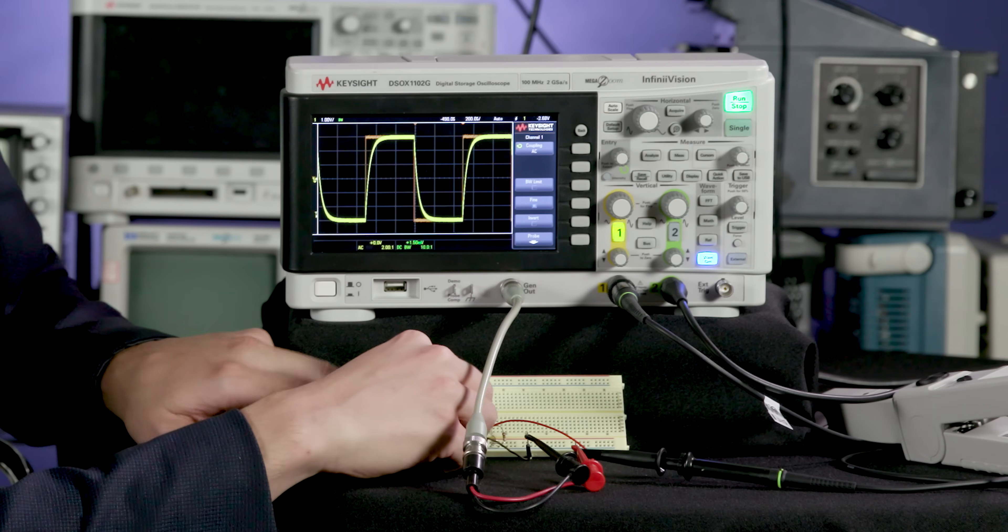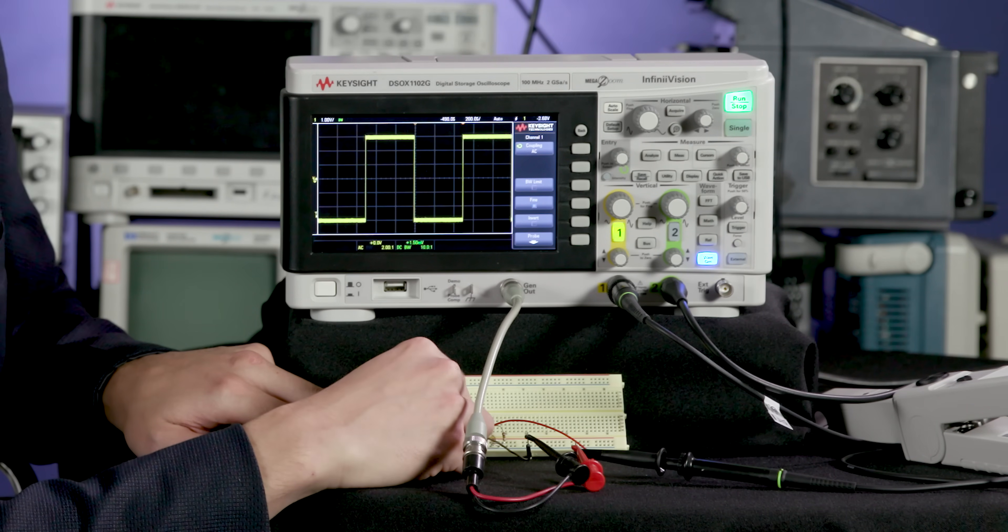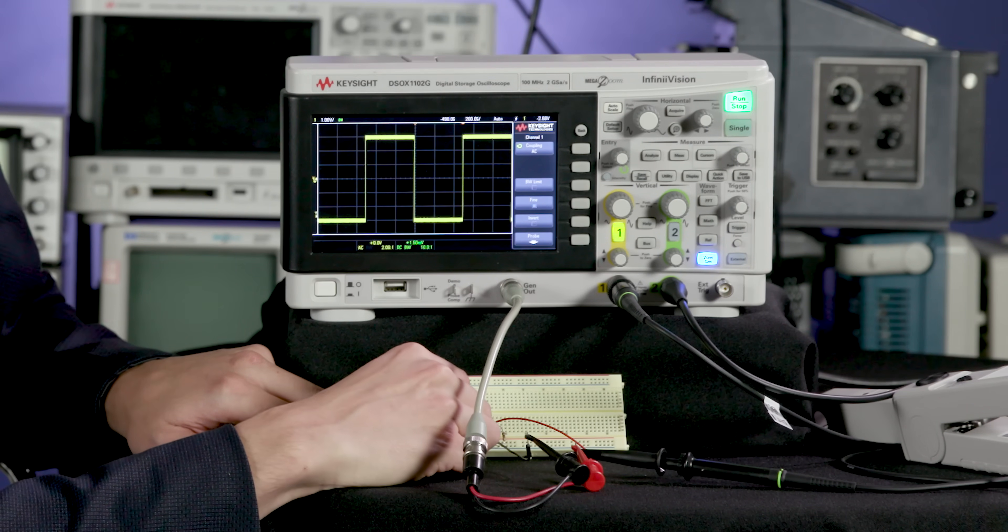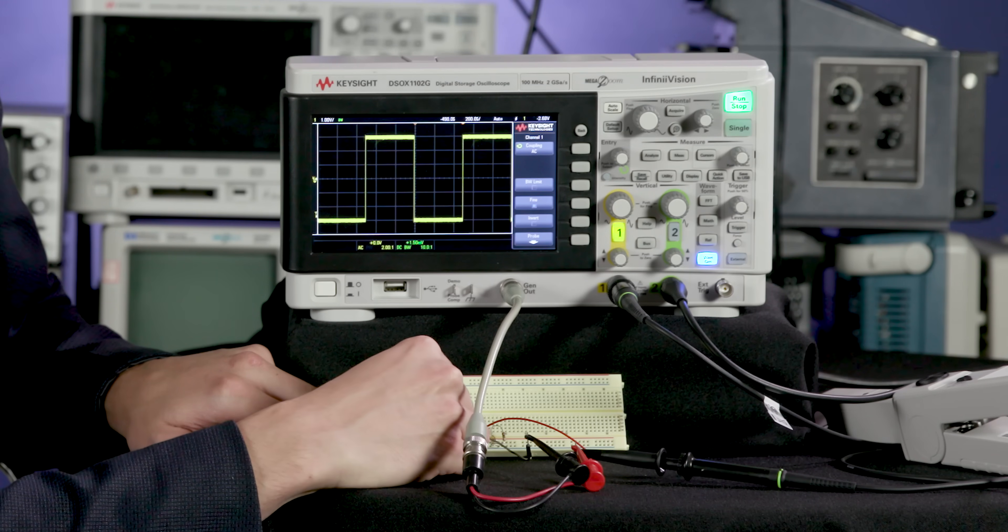Remember that a square wave is made up of an infinite number of increasing frequency sine waves. When I remove the capacitor we get a nice crisp edge, but when I add the capacitor we see that that edge gets a little rounder, and that's because the capacitor is filtering out the higher frequency components that make up that nice square wave.